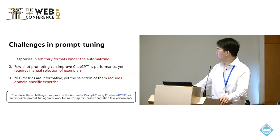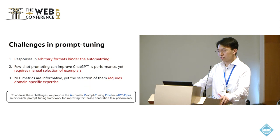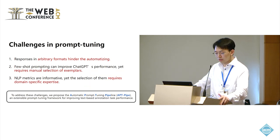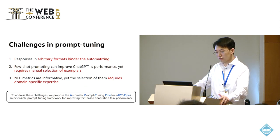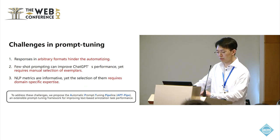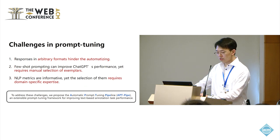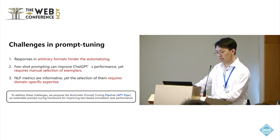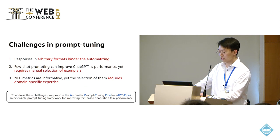To achieve this, there are some challenges in prompt tuning that we need to address. First, ChatGPT can generate unpredictable and unstructured responses that make automated parsing and annotation difficult. Second, although few-shot examples are helpful, example selection is generally done manually, which can be time-consuming and suboptimal. Third, although NLP metrics in prompts such as emotion and topics facilitate annotation performance, the selection of such metrics requires domain-specific expertise.